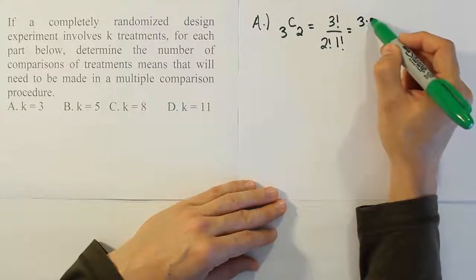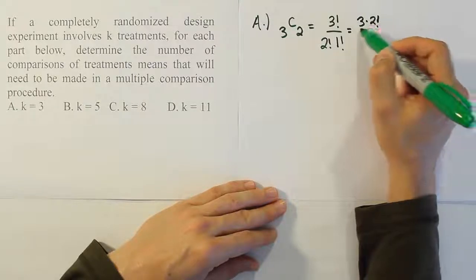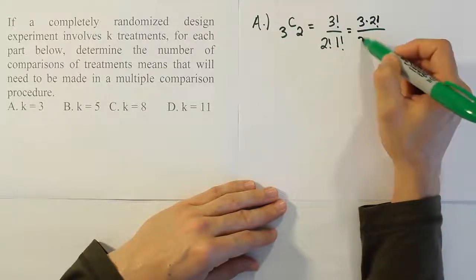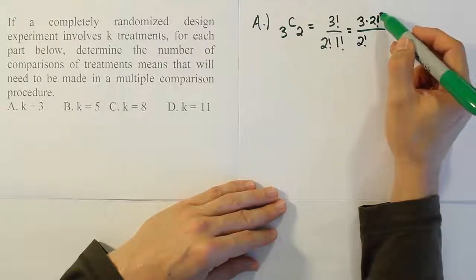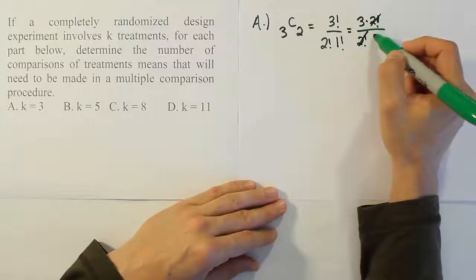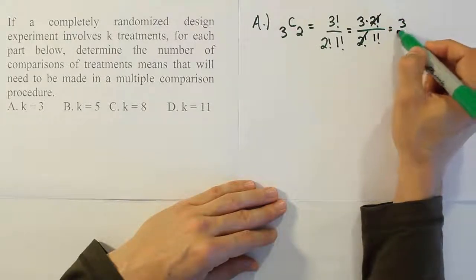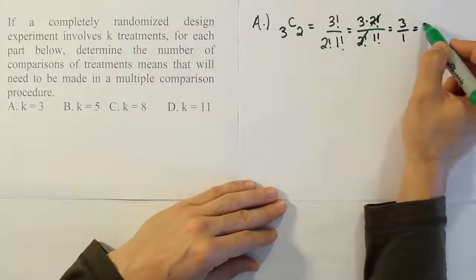3 times 2 factorial is going to cancel out with this value of 2 factorial here. So that cancels out, and you end up with 3 over 1 factorial, which is the same as 3 over 1, or in other words, 3.